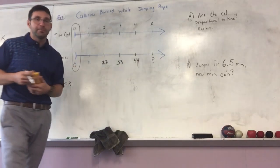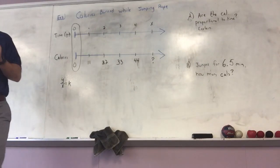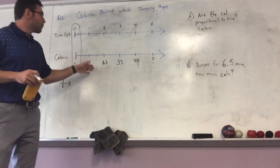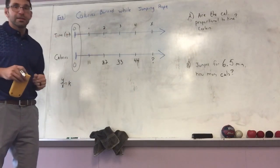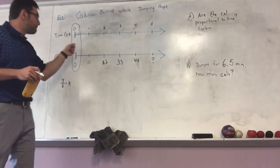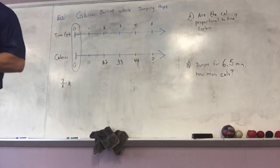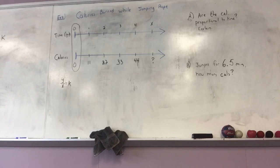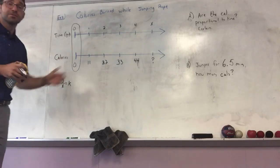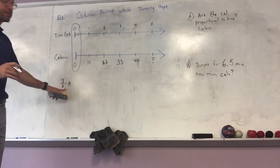Proportional relationships are also known as direct variation — y varies directly with x because it stays constant and goes through the origin. Your algebra teacher will discuss direct variation further, but know that what we're doing here truly is direct variation.